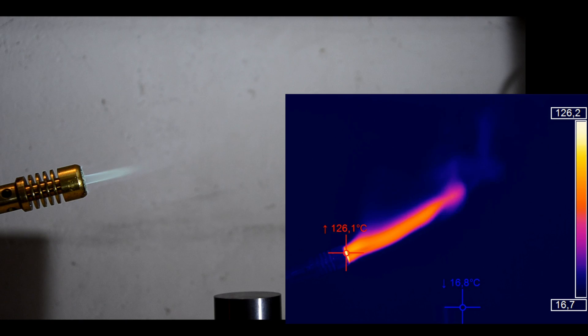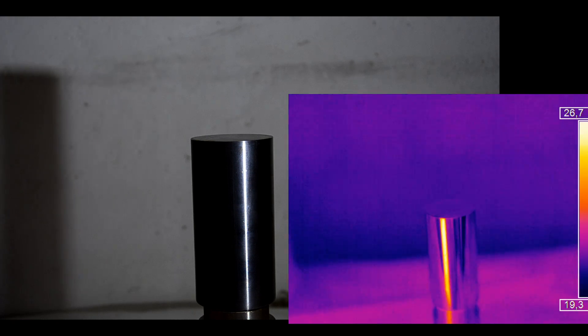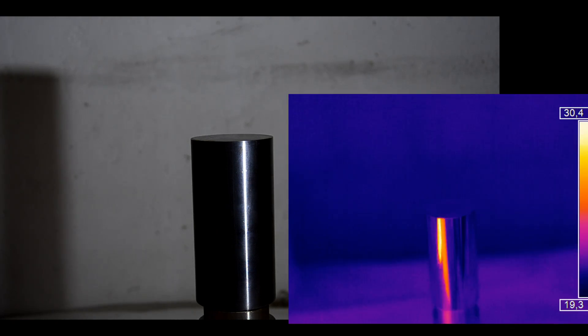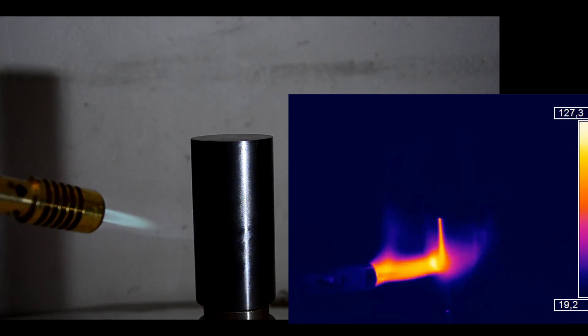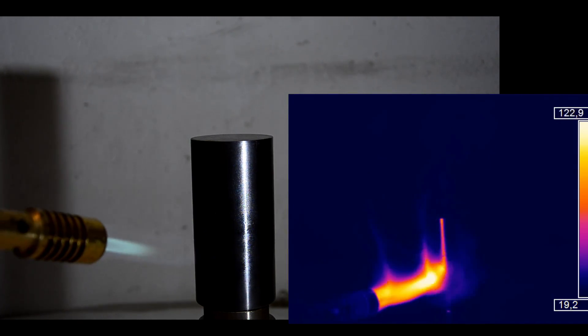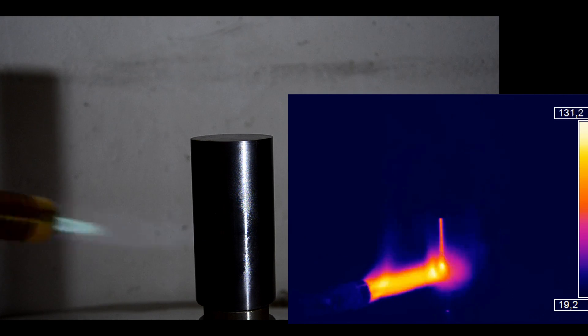Now we use the same torch to heat up a cylinder made out of tantalum. So it definitely wouldn't melt. You see, the cylinder gets hotter, where we touched it with the torch. It gets hotter and hotter as expected.